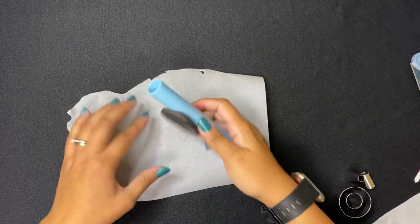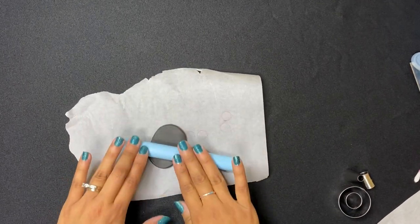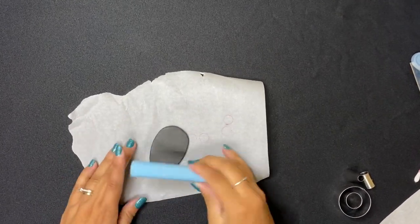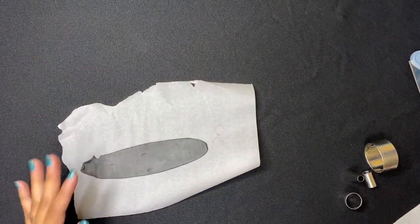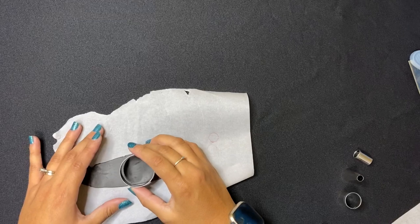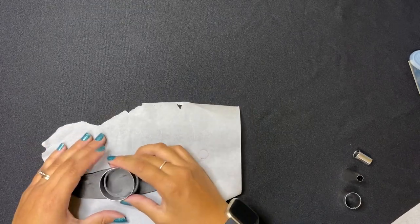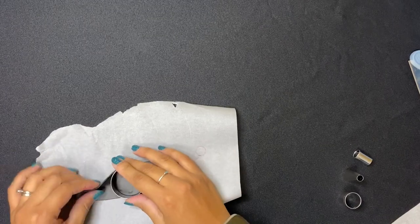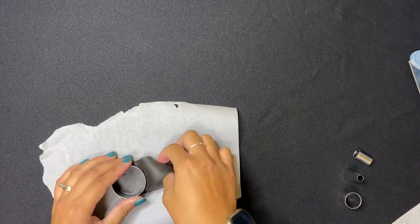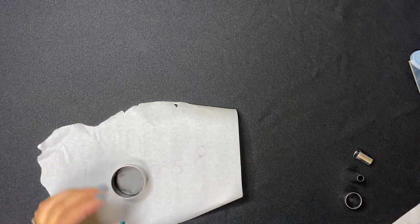First, you're going to roll out your black clay. You want it to be pretty thin, no thicker than an eighth of an inch. After you're done rolling it out, you're going to cut out a circle. It'll be one and a half inches wide. If you need a pattern, you can pick one up from the library or print one out from our blog post.